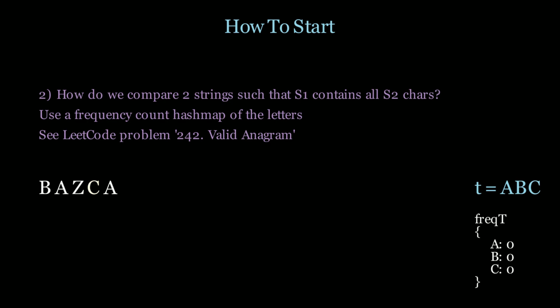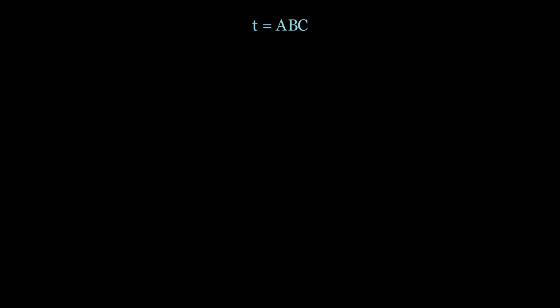Now the hash map has all values of zero. If you have all values of zero, that means that for every character we had in t we now have them in our string as well. It's okay to even have negative values — for example, on the last a if we decrement the hash map we'll have negative one for a. That means the string we're looking at has one more a than we need, and that's fine, because we still meet the criteria of having all the characters of t.